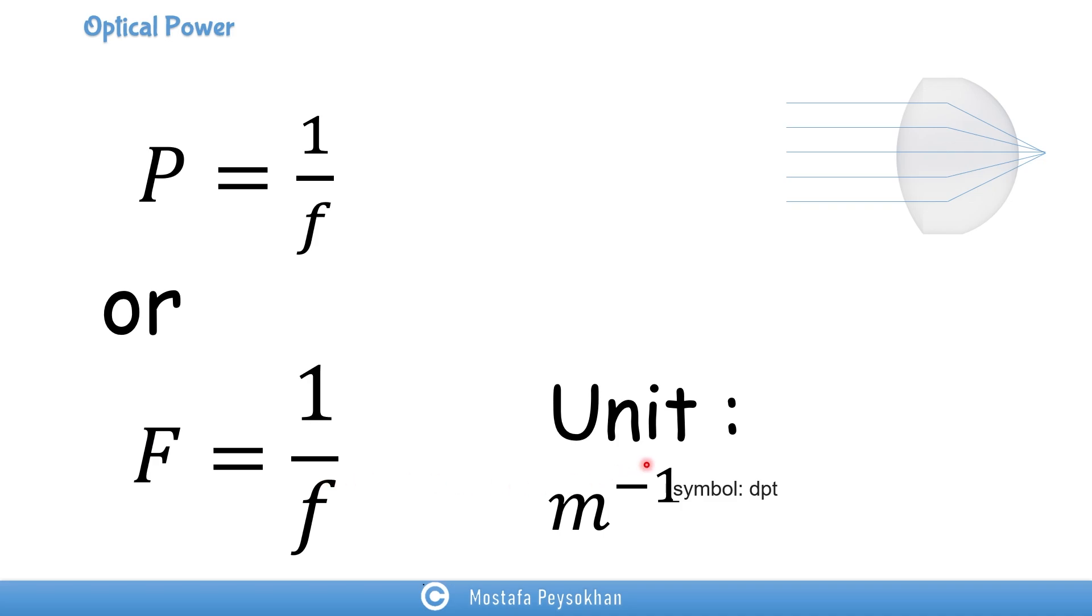And the unit for the optical power is one over meter. So we never use one over millimeter or something like that. And the symbol is diopter or DPT. That's the unit of the optical power, and this is the symbol that we're going to use.